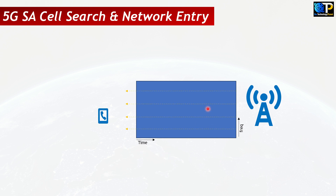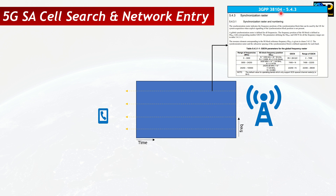In 5G standalone, certain positions are defined by 3GPP 38.104 specification called GSCN — the Global Synchronization Channel Raster. The SSB can only be located on these frequency carriers. For instance, if this is our frequency band, the SSB cannot be placed just anywhere — unlike NSA where the LTE anchor tells the UE the SSB location. In standalone, 3GPP mandates the SSB must be on these predefined GSCN locations, which are spaced much farther apart so the UE doesn't have to scan the whole channel.